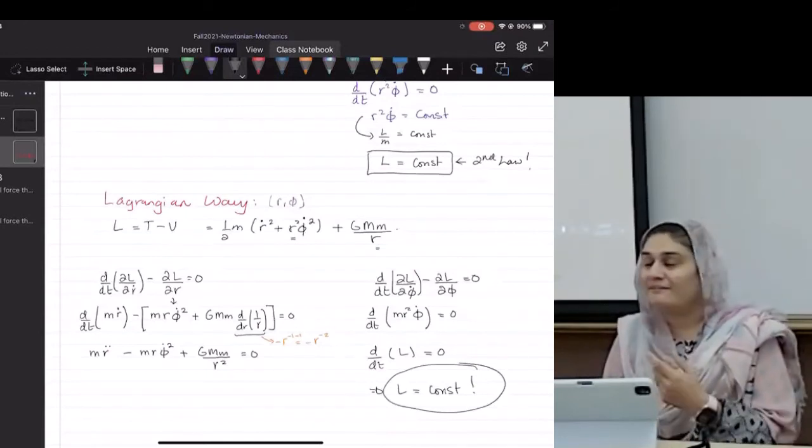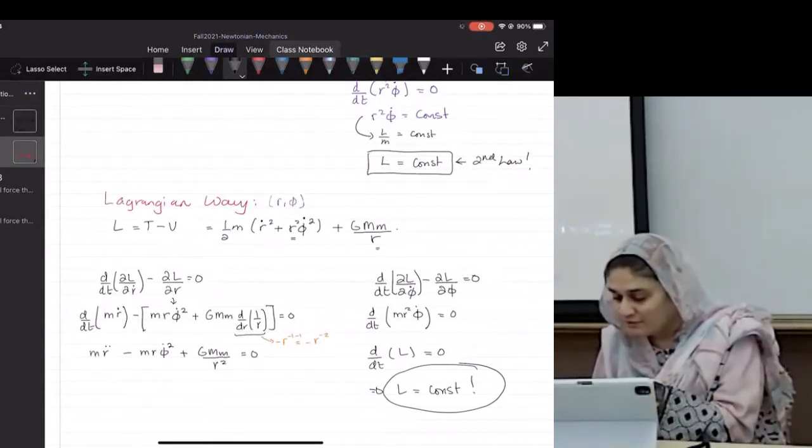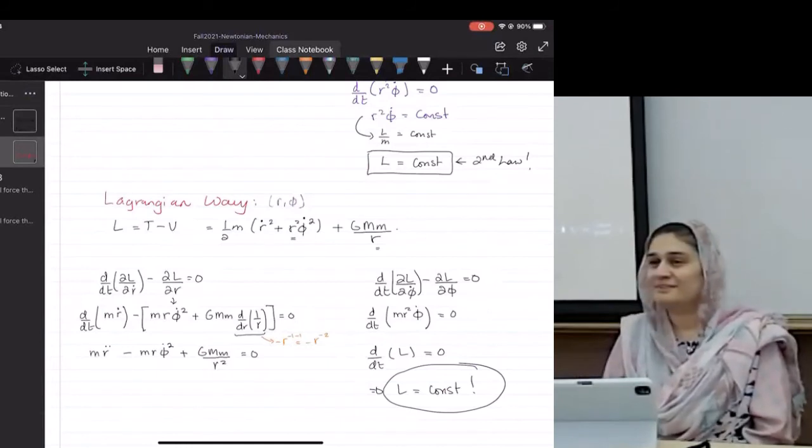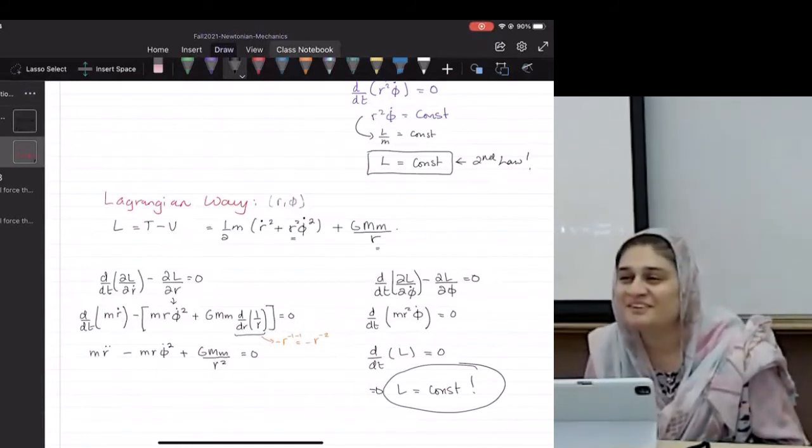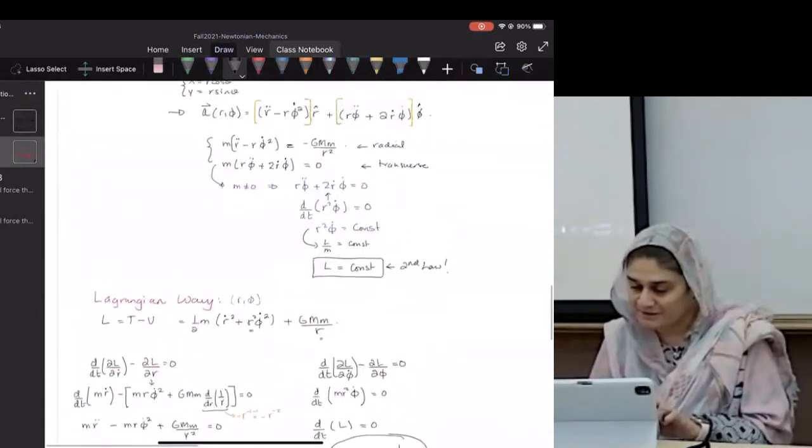It took us forever and a day to do it the Newtonian way. It took us like one, two, three, four steps to do it this way. Oh, we don't care about the radial equation. So if you match the radial equations, they're the same. Look at it.